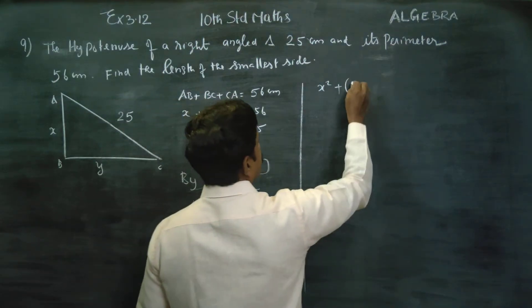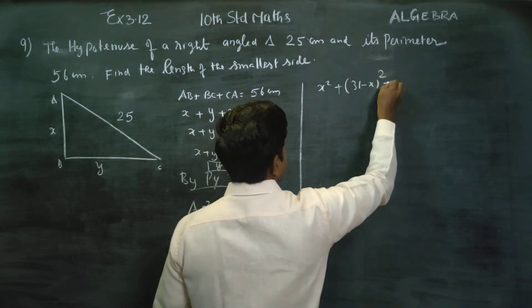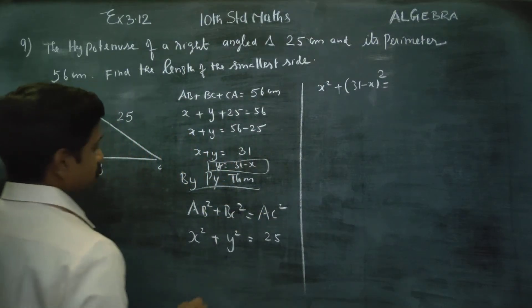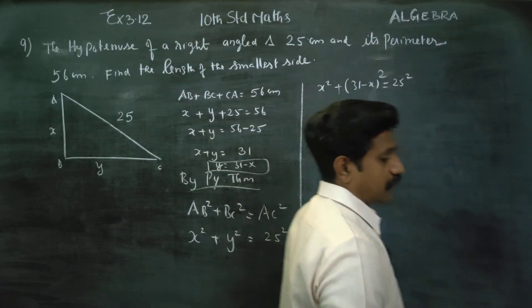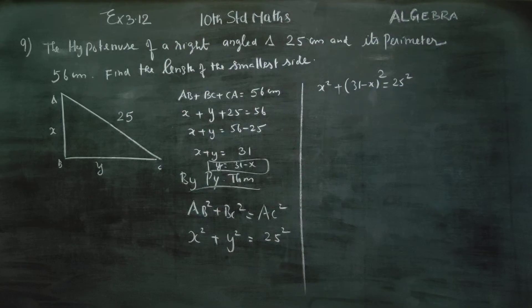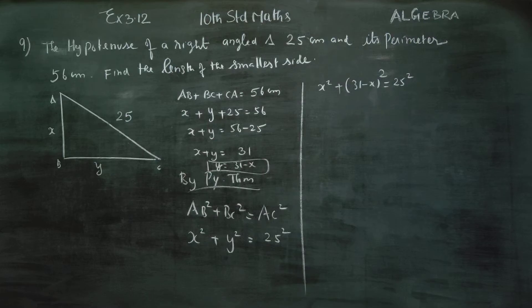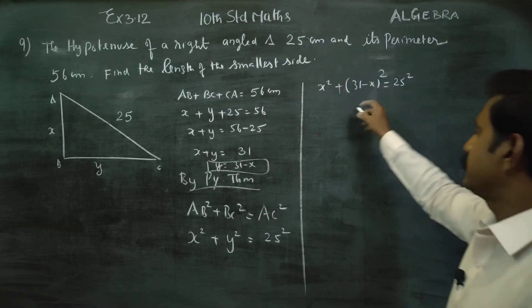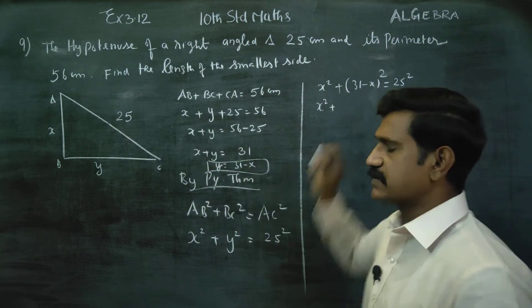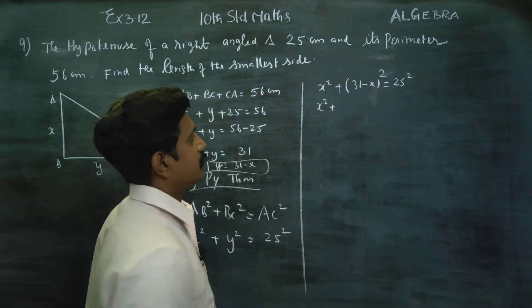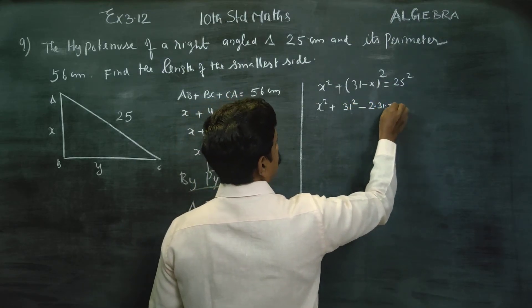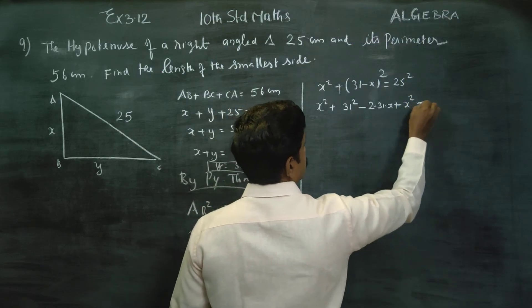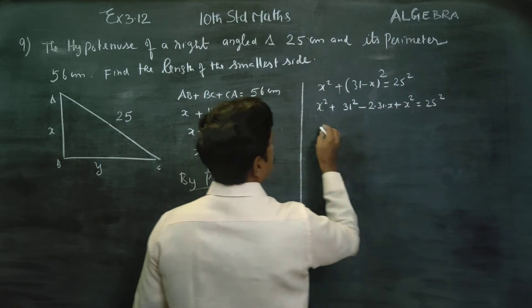We proceed using the identity (a minus b) whole square. Since y equals 31 minus x, we substitute: x² plus (31 minus x)² equals 25².